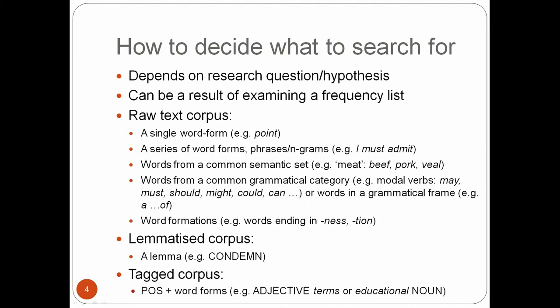If you are working with a raw text corpus — a corpus that is not annotated — you can search for a single word form like point, a combination of word forms (that is, phrases or n-grams, for example, I must admit), words from a common semantic set (for example, beef, pork, and veal are from the common semantic set meat), words from a common grammatical category (for example, modal verbs like may, must, should, might, could, or can), words that occur in a particular grammatical frame (for example, a something of), or word formations (for example, words ending in -ness or -tion).